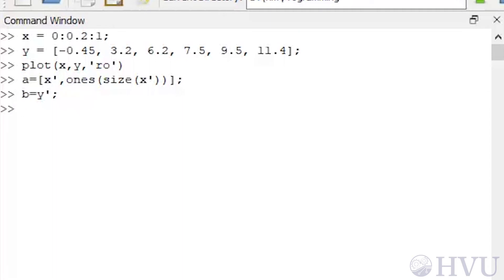To solve for the coefficients in a straight line, use the backslash operator, COEFS equals A backslash B. With the form of the A matrix I used, the first element in this COEFS array will be the slope, and the second element will be the Y intercept.